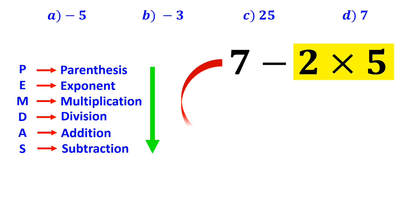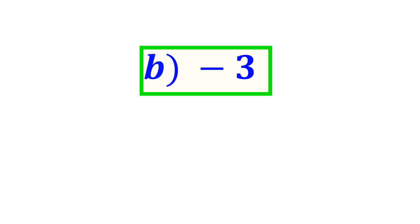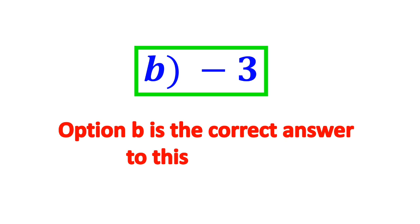So, instead of this expression, we can write 7 minus 10, which finally gives us the answer negative 3. Therefore, option B is the correct answer to this question.